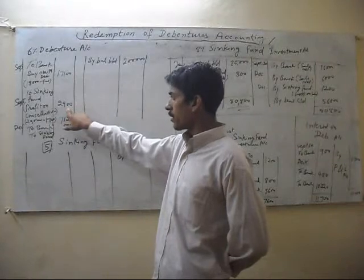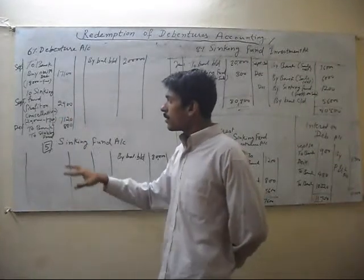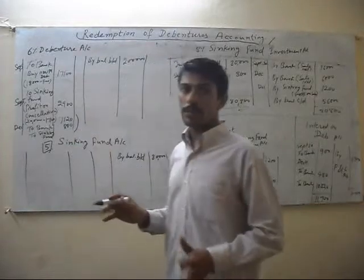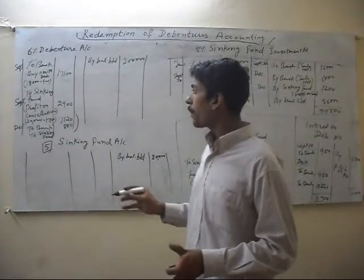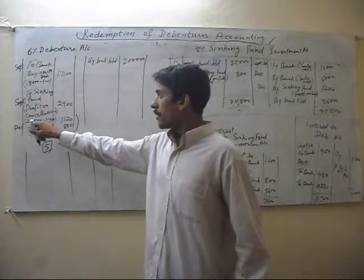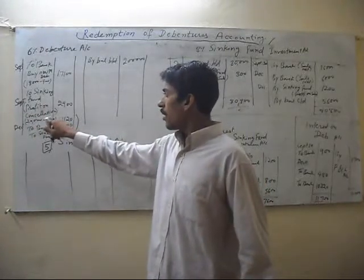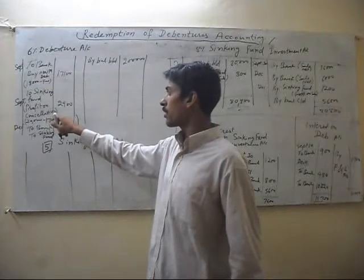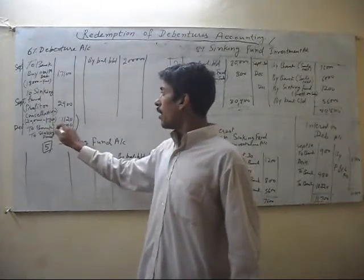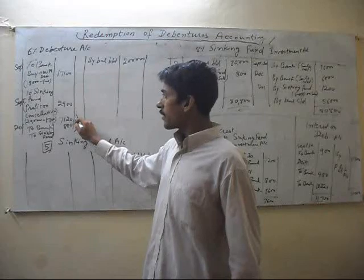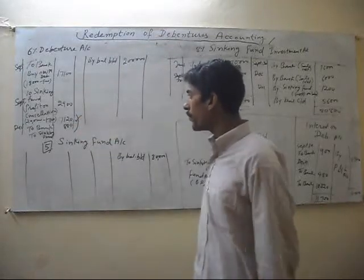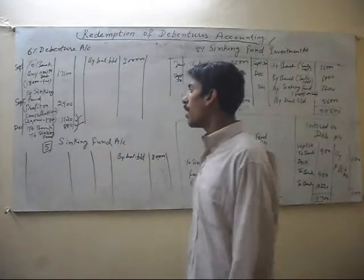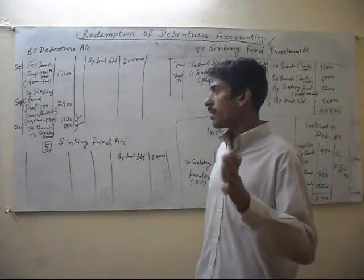In December, we again buy our own debentures and cancel them. The net amount we cancelled is 7,120, excluding interest in this amount. And the gain on cancellation is 880.